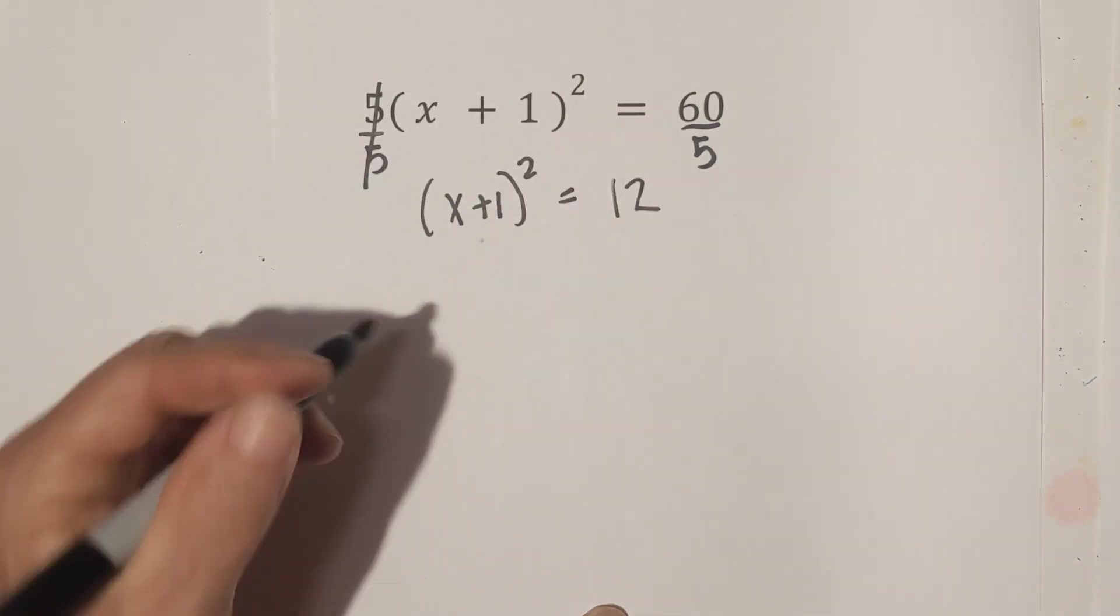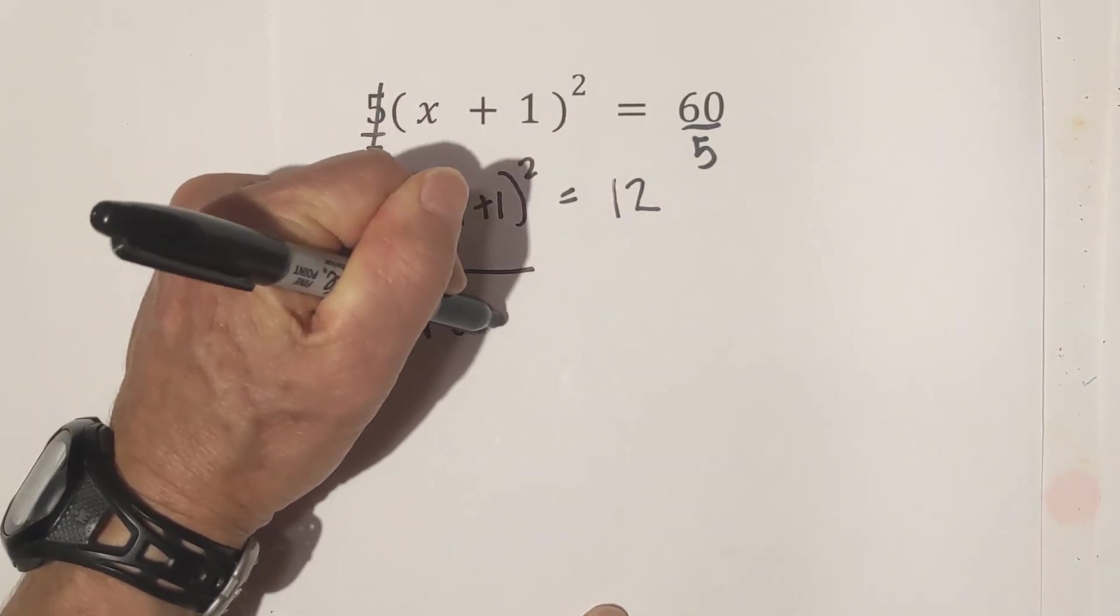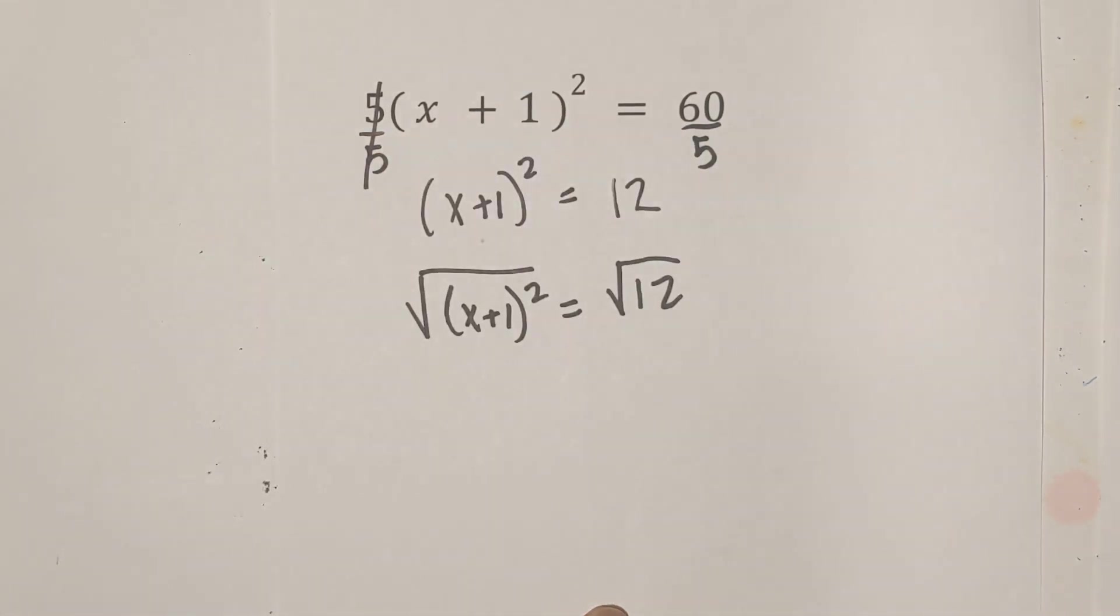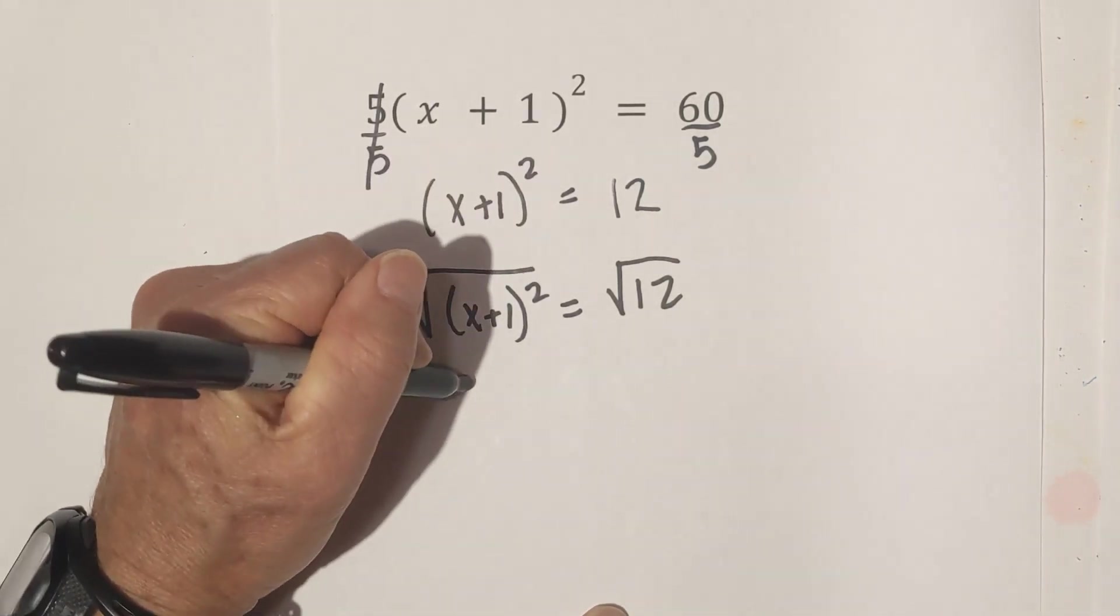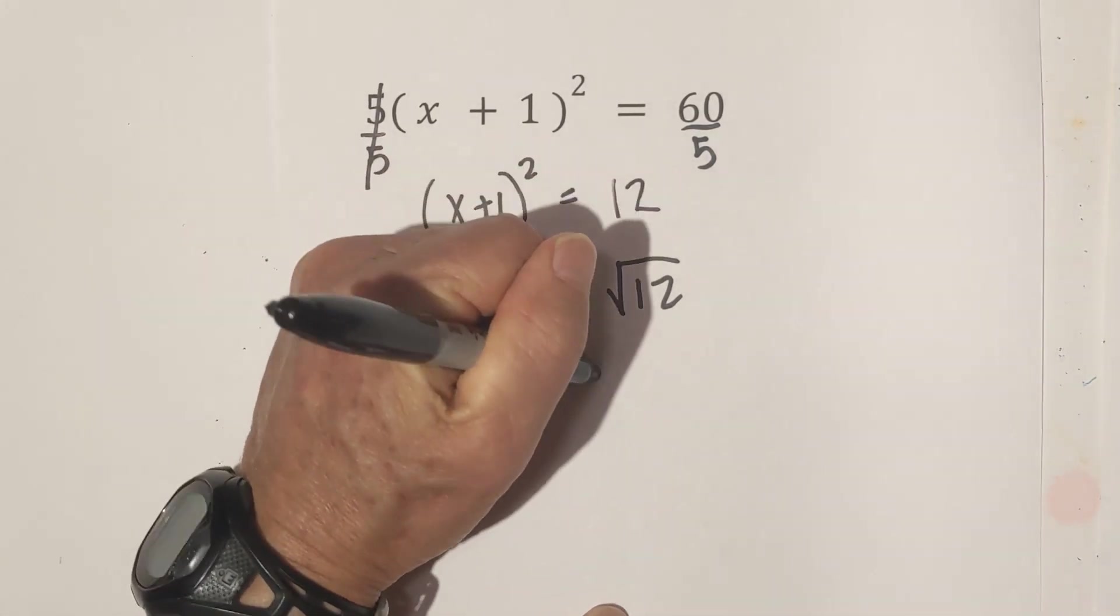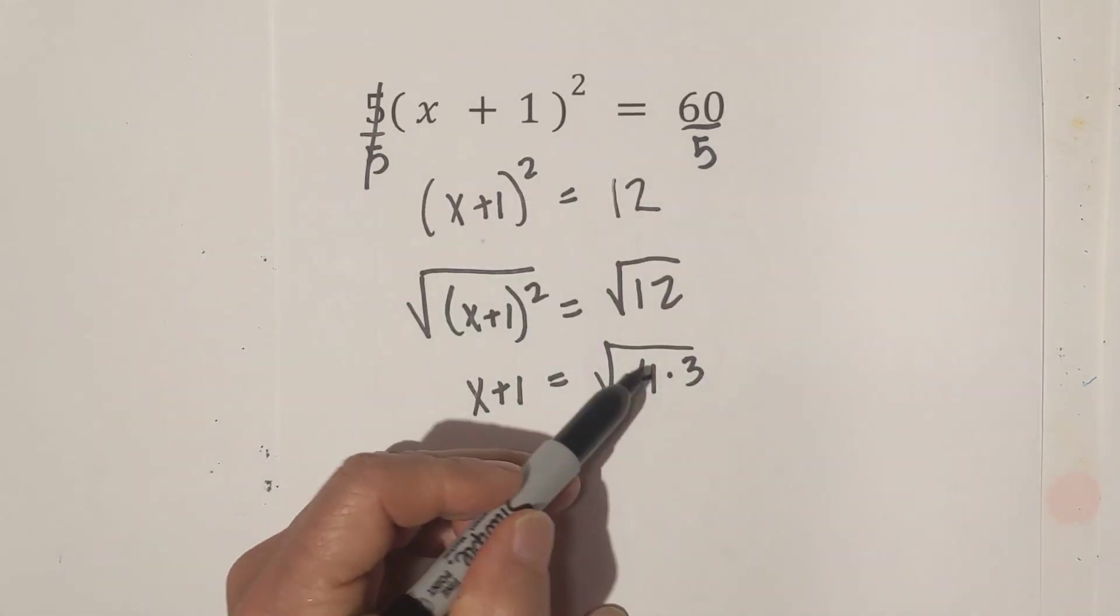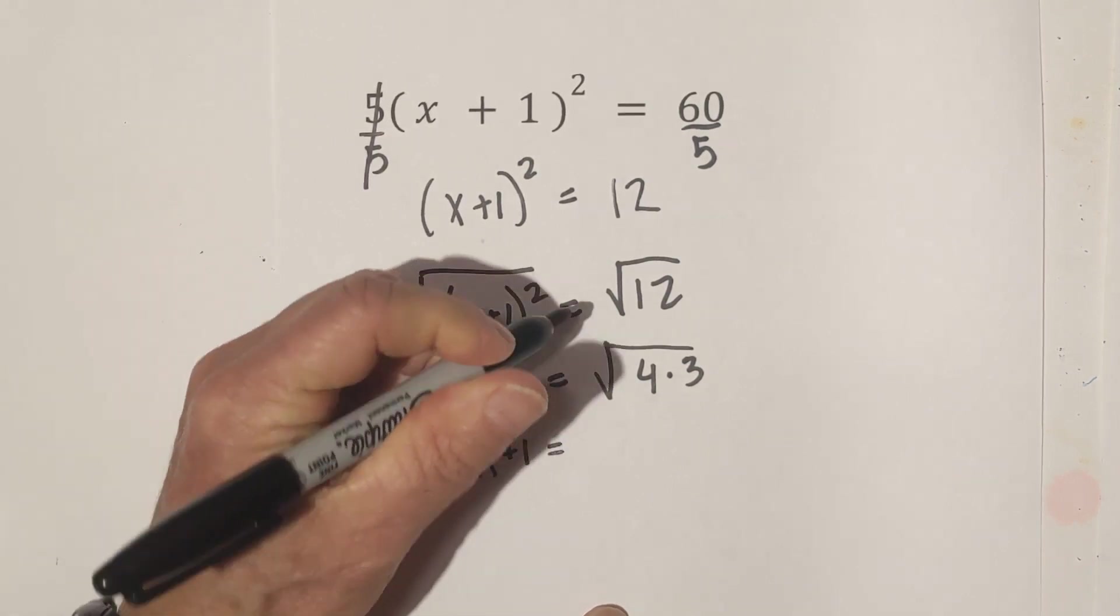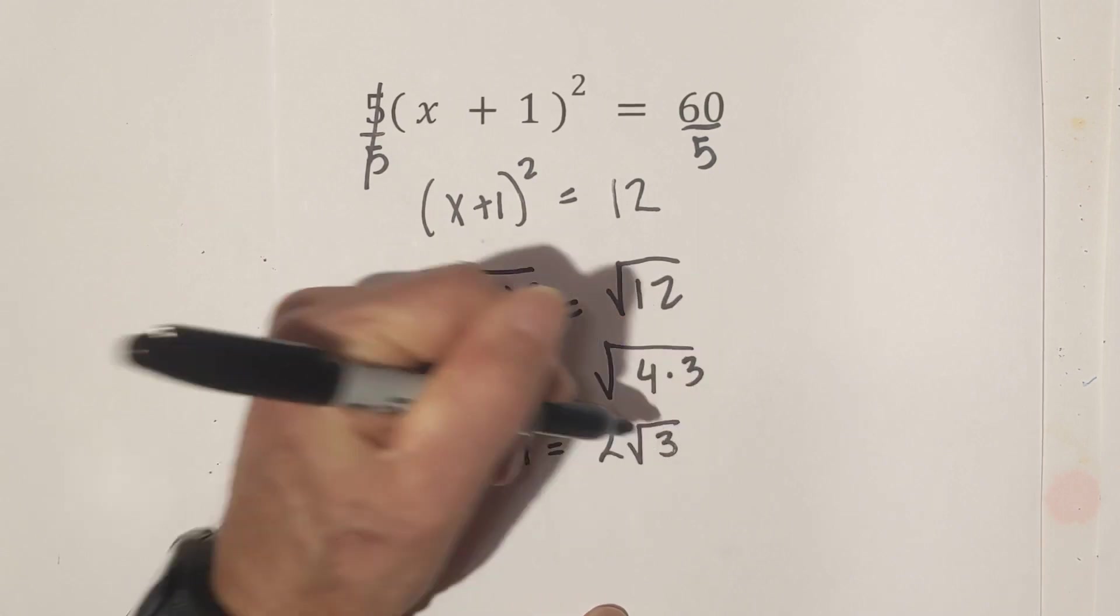Now what do we do next? Let's get rid of this square by taking the square root. So we have x plus 1 squared equals the square root of 12. Now this now becomes. We take the square root of this is x plus 1 equals. And the square root of 12. It's not a perfect square. But we can go 4 times 3. So 4 is a perfect square. So we can take that out. So we have x plus 1 equals square root of 4 is 2 square root 3.